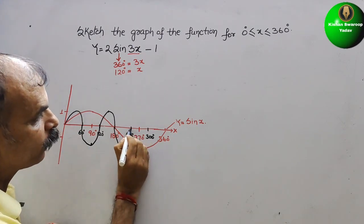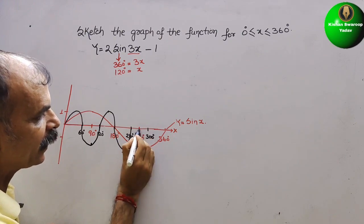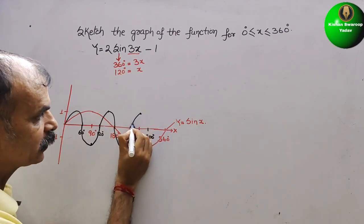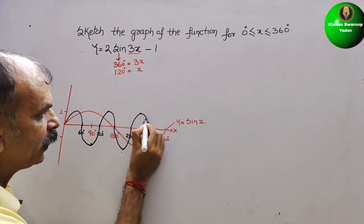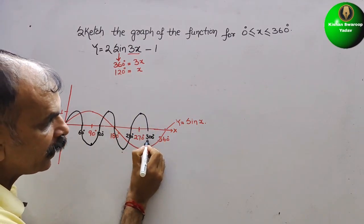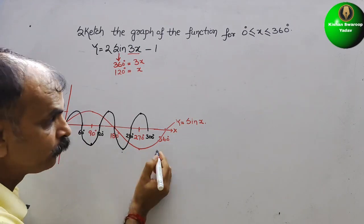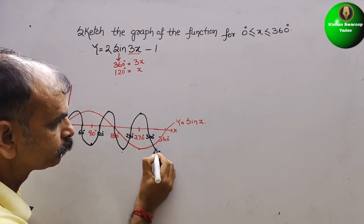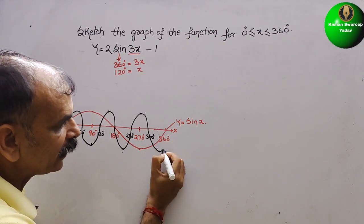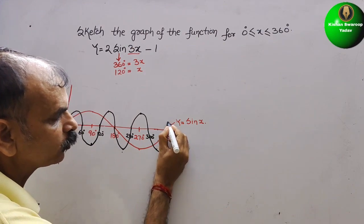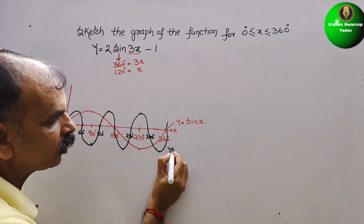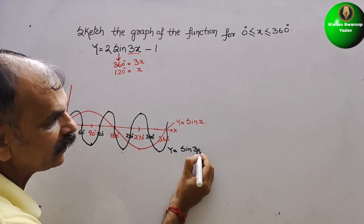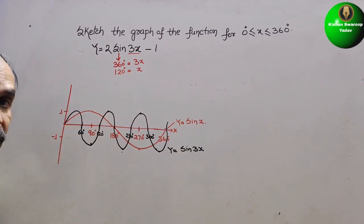For the third cycle: from 240° to 300°, the wave rises to 1 at 270°, returns to 0 at 300°. Then from 300° to 360°, it goes to minus 1 at 330° and returns to 0 at 360°. This completes the graph of y = sin(3x).